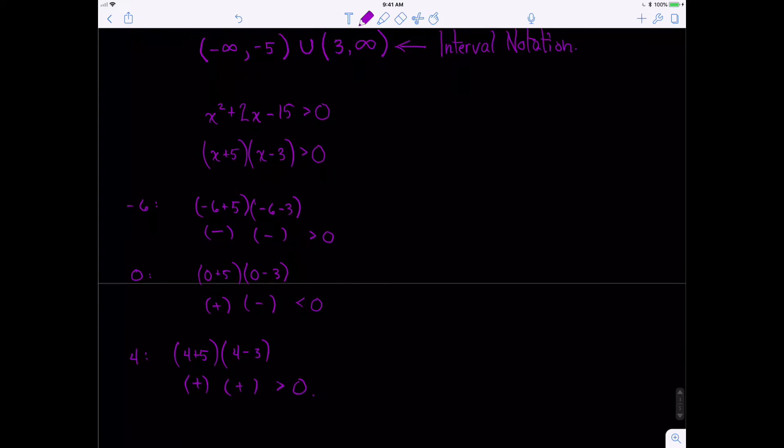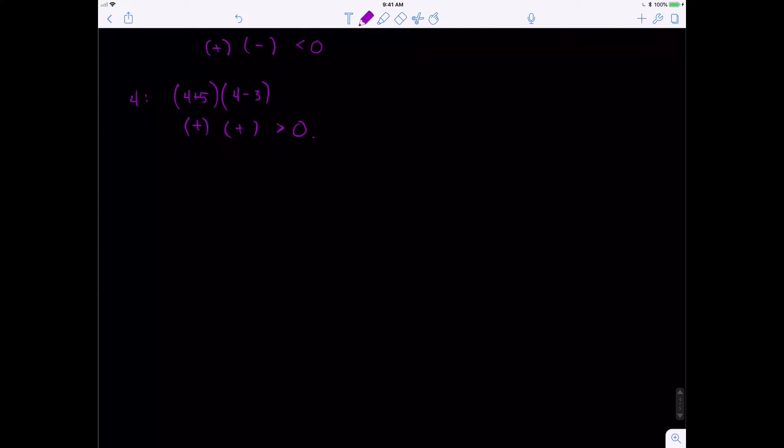All right, let's try another example. We're going to take a look at the problem. Solve x plus 1 over x minus 10, less than or equal to 0. There's two parts.